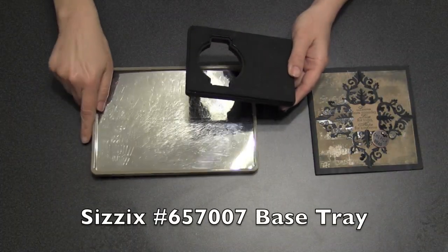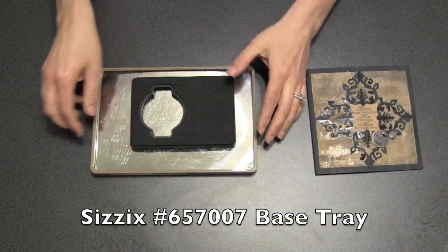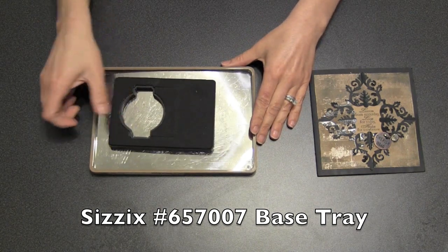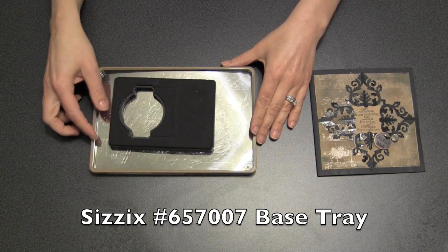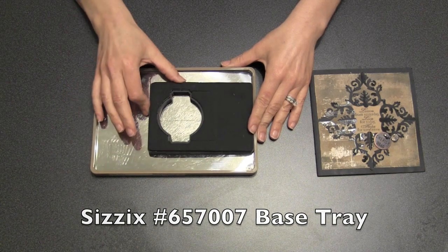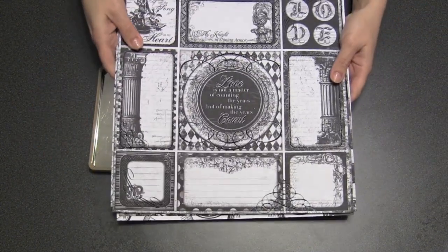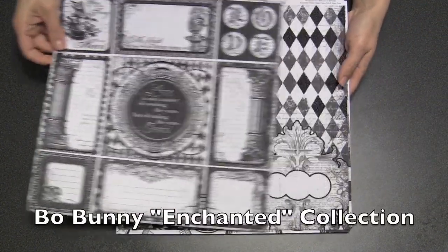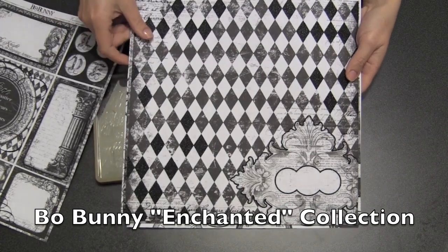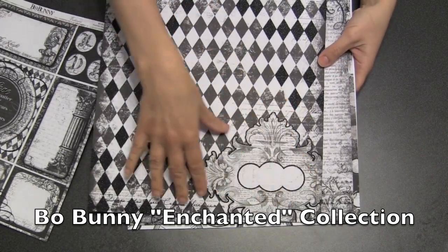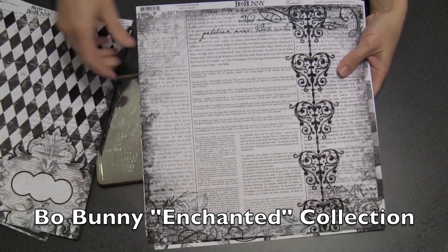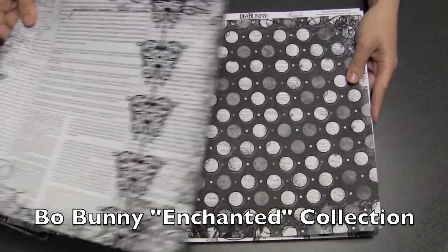To do that, I'm going to turn to the base tray. Pop'n'Cuts inserts are the same height as Movers and Shapers' shapes. So that means since they fit on the base tray, you can cut them on the base tray. So let's make a card. Now I fell in love with this Bow Bunny Enchanted collection in the store. And I think this paper here has a great section down here to be my integrated Pop'n'Cut card.